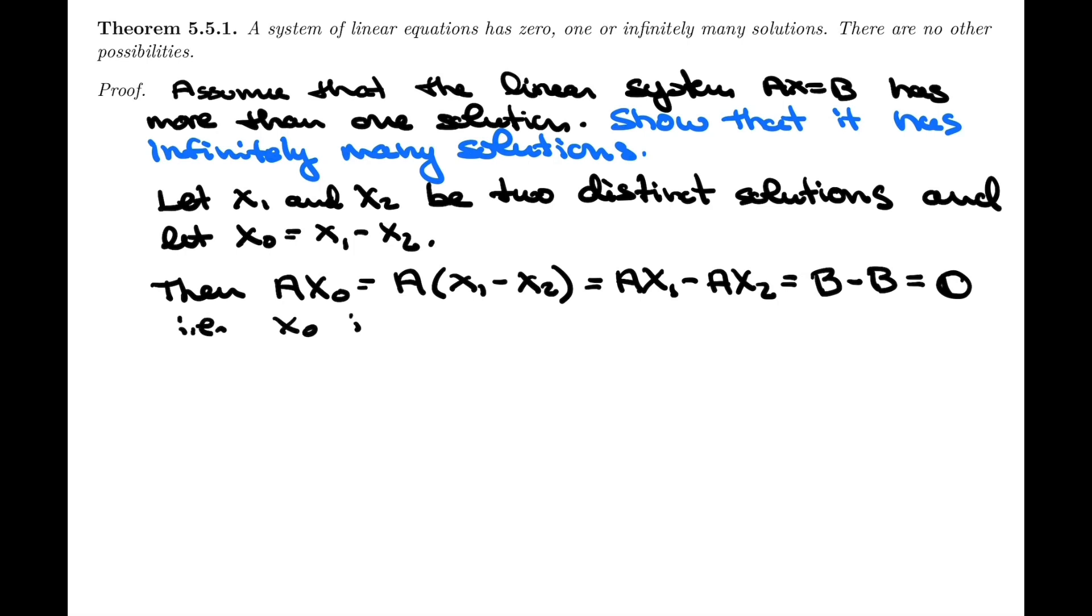In other words, that's like saying that X0 is a solution of the homogeneous system, is a solution of the homogeneous system, which we can denote by AX equals zero. So the same matrix A that we're using above, but this time as a homogeneous system. So we've shown that X0 is a solution of that homogeneous system.